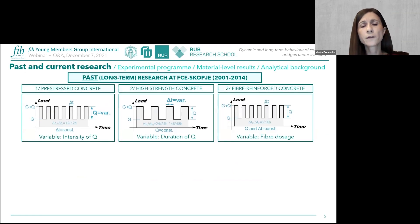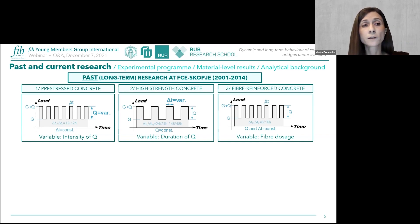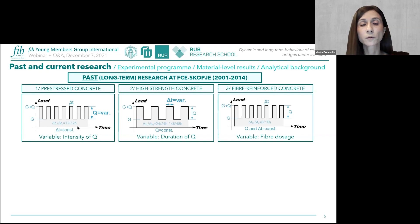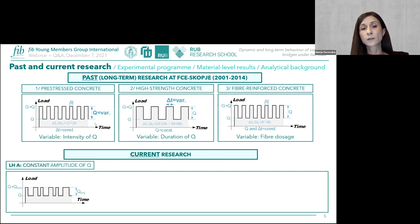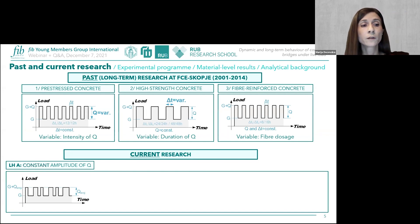In the past two decades at the Faculty of Civil Engineering in Skopje, large experimental efforts were dedicated to studying the behavior of concrete elements under repeated loads. All previous experiments had in common a constant variable amplitude and constant duration of the variable load in each loading cycle. In the current research, an additional attempt is made to provide more realistic loading scenarios, focusing on different types of load histories found in city bridges.